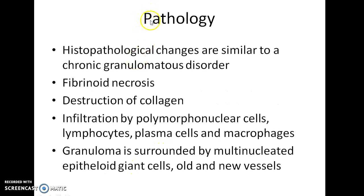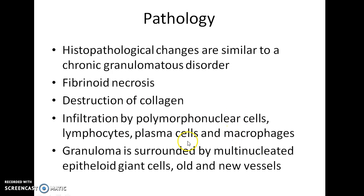Now coming to the pathology in a case of scleritis. Histopathological changes in scleritis are similar to a chronic granulomatous disorder. There is fibrinoid necrosis, destruction of collagen, and infiltration by polymorphonuclear cells, lymphocytes, plasma cells, and macrophages. Granuloma is seen surrounded by multinucleated epithelioid giant cells, old and new vessels.